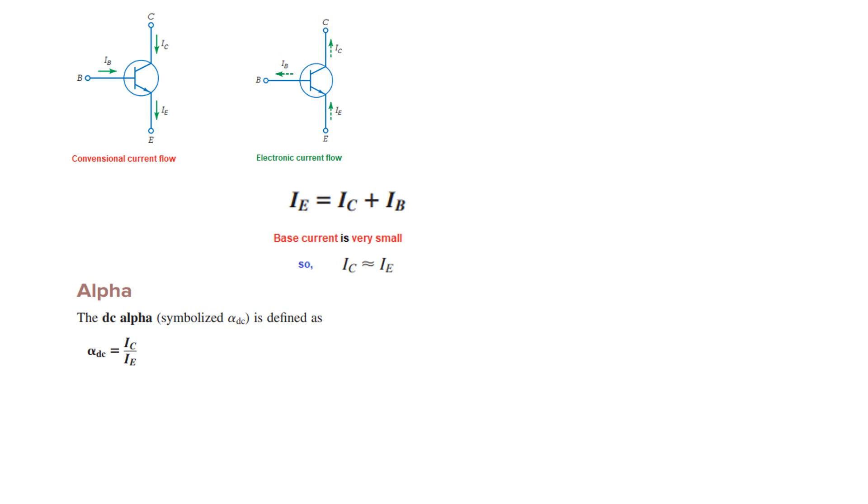Then we define two more terms. The first is called alpha. Alpha is defined by the collector current divided by the emitter current. So it is the ratio of collector current and emitter current. And it is called alpha DC because we are now dealing with the DC signals. When we deal with the AC signals then we will come across alpha AC as well. But for the time being alpha is IC over IE. And since IE is slightly greater than IC, therefore this value is close to one, or it is generally around 0.99.